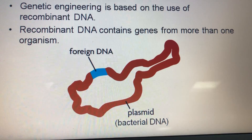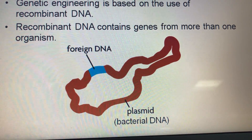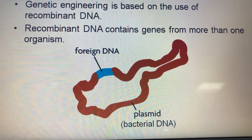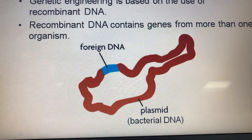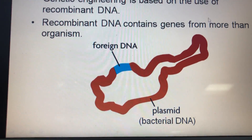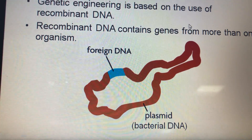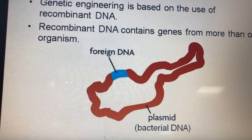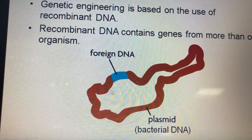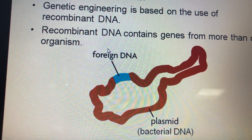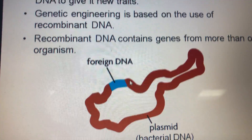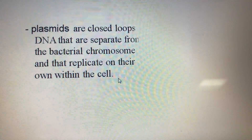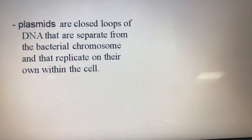Recombinant DNA is made by using a plasmid from bacteria. A plasmid is a DNA loop that is separated from the chromosomes of bacteria and has the ability to replicate. They extract this plasmid from the bacteria and add some genes of foreign DNA to it.